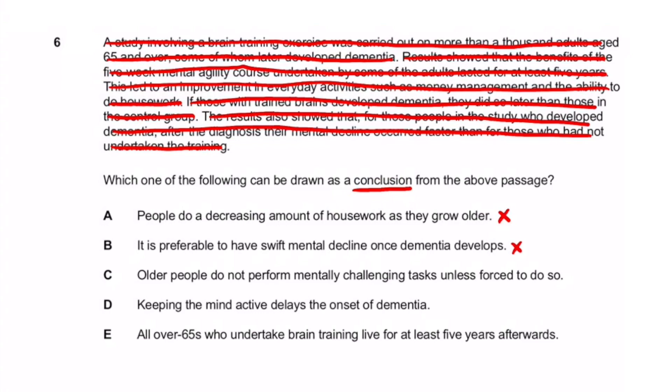Answer C says 'older people do not perform mentally challenging tasks unless forced to do so' — nowhere in the paragraph does it say anything about older people being forced to do mentally challenging tasks, so it can't be this one. Answer D says 'keeping the mind active delays the onset of dementia' — that's pretty much the gist of the passage. Training your brain is beneficial in terms of dementia, meaning you wouldn't decline as fast as people in the control group who didn't train.